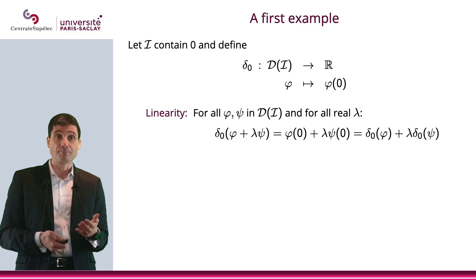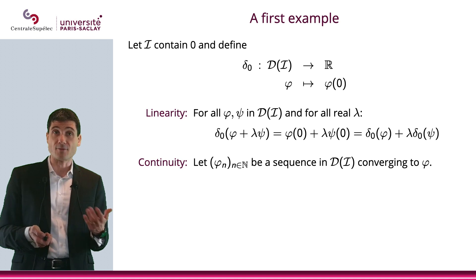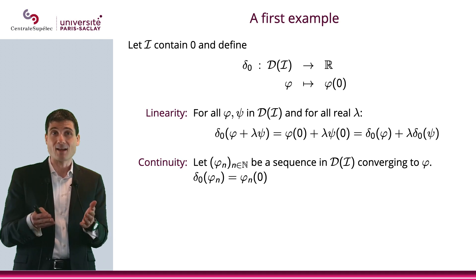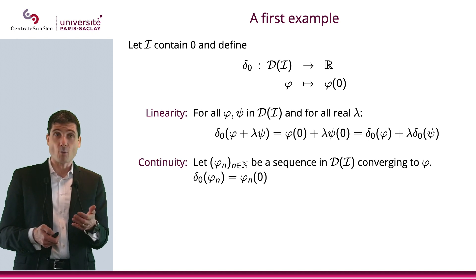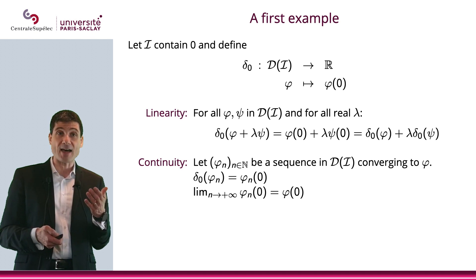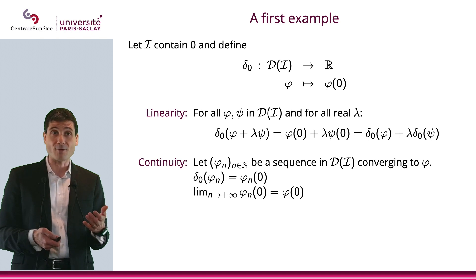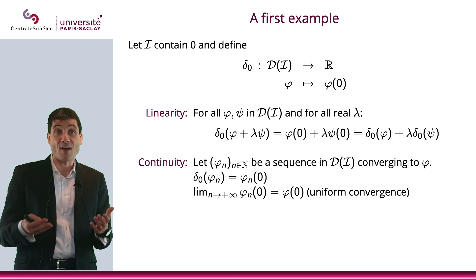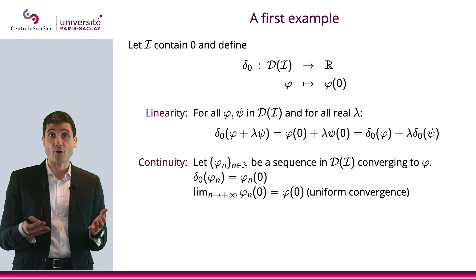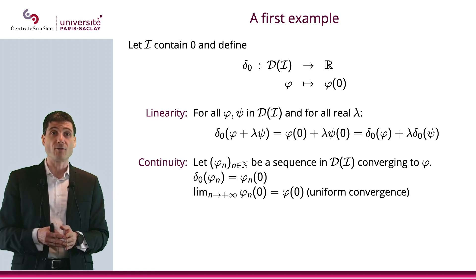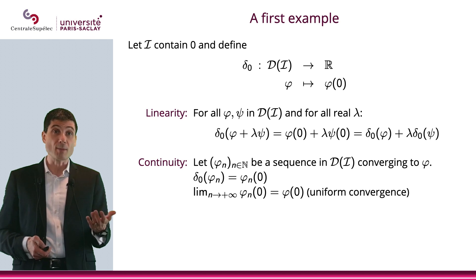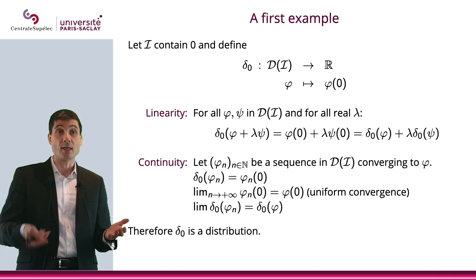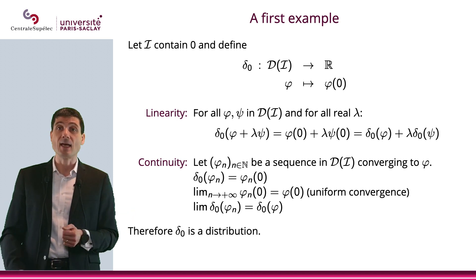What about continuity? Let's consider a sequence of elements of D converging to φ, and apply δ₀ to φₙ. By definition, that is φₙ(0). When we take the limit as n goes to +∞, that will be φ(0) — guaranteed by uniform convergence (though even pointwise convergence would suffice here, and it comes from uniform convergence). So we do have this convergence, which means the limit of δ₀(φₙ) is δ₀(φ). In other words, δ₀ is both linear and continuous — it is a distribution.